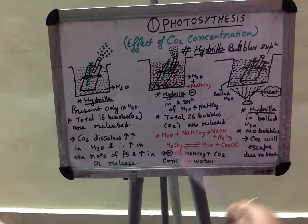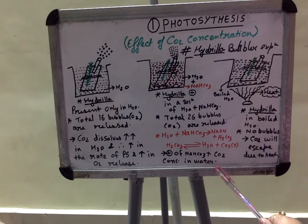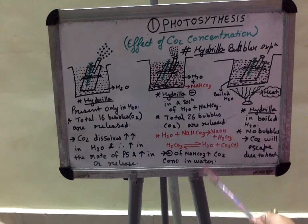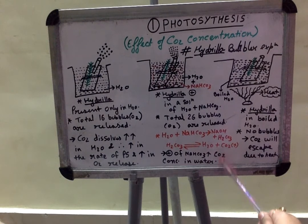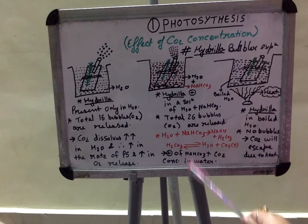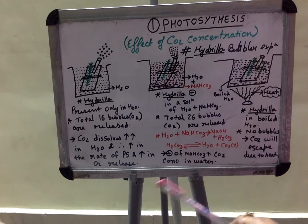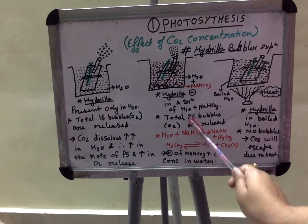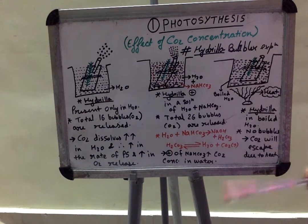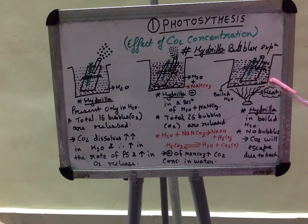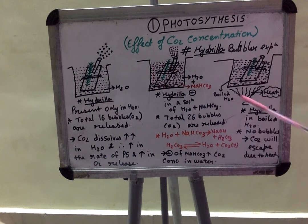So presence of sodium bicarbonate crystals in water will definitely increase the concentration of carbon dioxide, or it will increase the carbon dioxide capacity to get dissolved in water. And therefore, number of bubbles are 26 in case of second diagram. In our third diagram, if we heat up the whole apparatus using an external source, that is a burner,